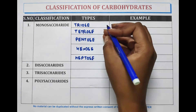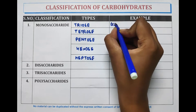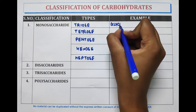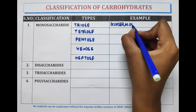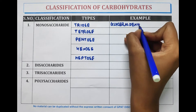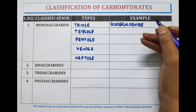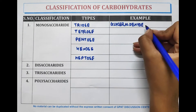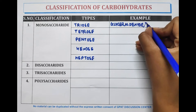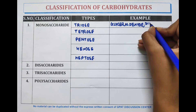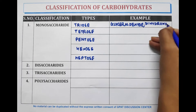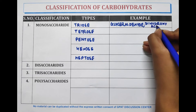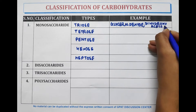The example of triose is glyceraldehyde and dihydroxyacetone.